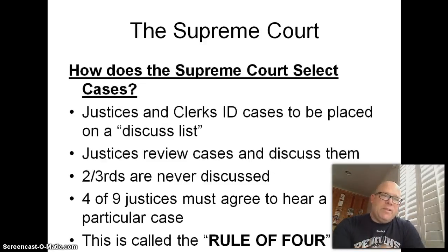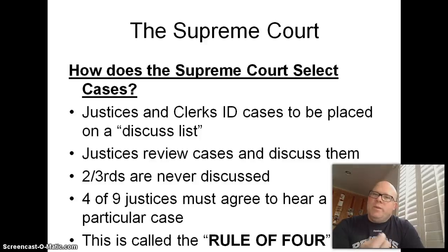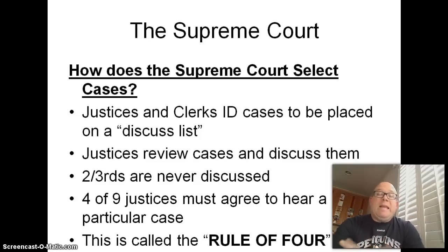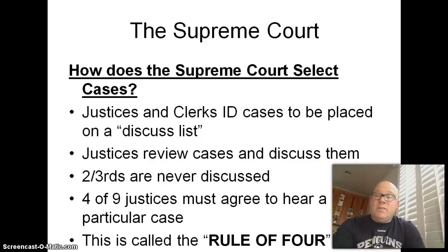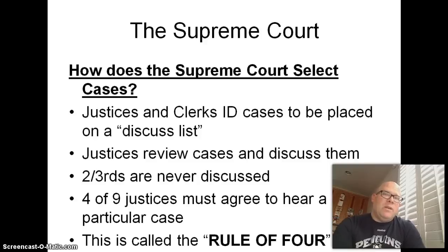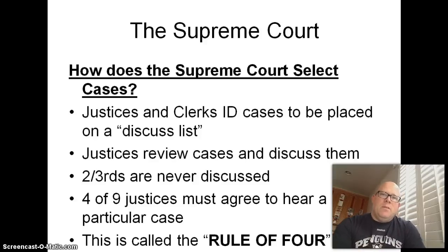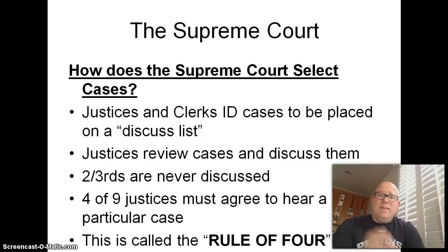How do they pick cases? The justices and their clerks — each justice generally has a handful of law clerks, individuals right out of law school — handle a lot of the research, help work on opinions and write briefs. They create what's called a discuss list, a list of issues that court or a particular justice would like to see more of. Justices review and discuss cases they're interested in. More than two-thirds of cases that make it to the Supreme Court are never really discussed by the justices. Four of the nine justices have to agree to hear a particular case — this is called the rule of four — so a minority of the court can get together and agree to hear a case.